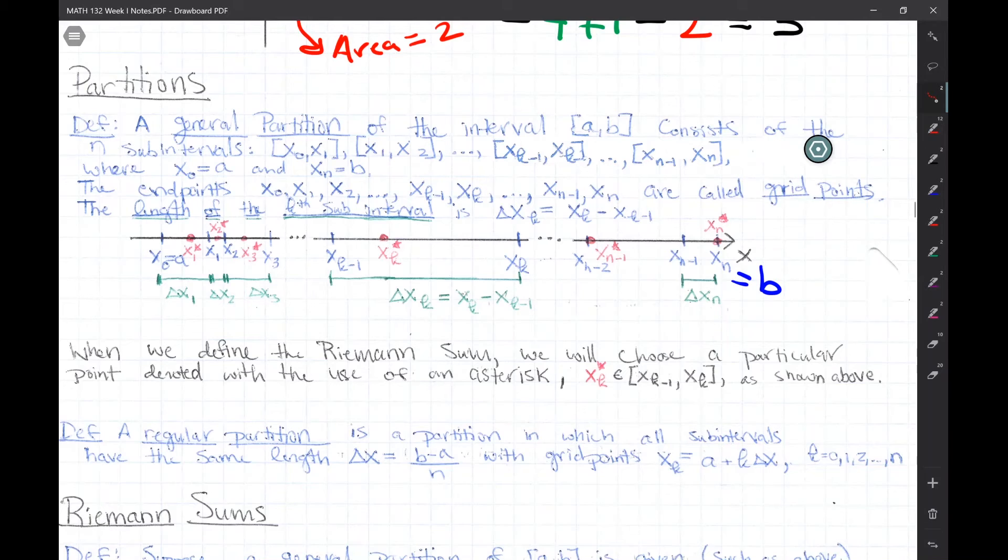So if you want to divide your interval from A to B that we started out with into a regular partition with n different sub-intervals, and we want them all to have the same length, well the length of each one sub-interval is going to be B minus A, so the length of the whole interval, divided by n.